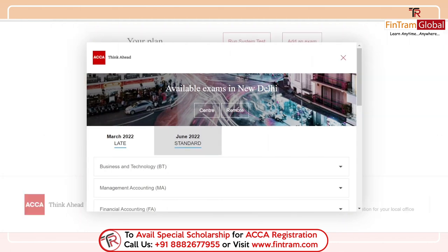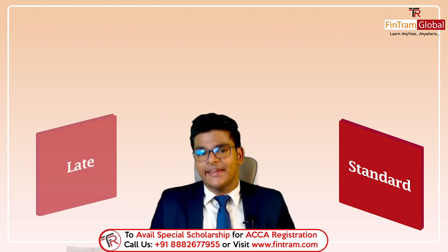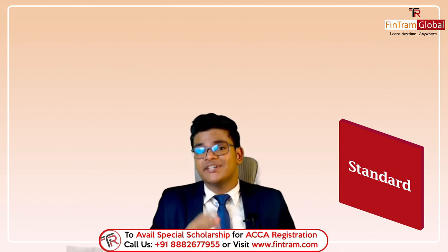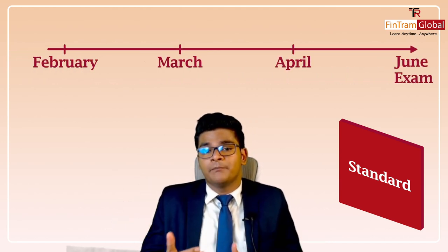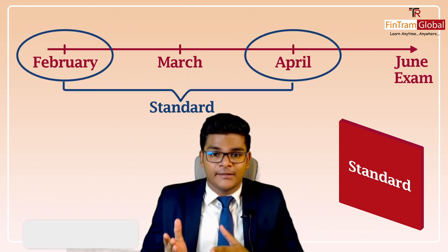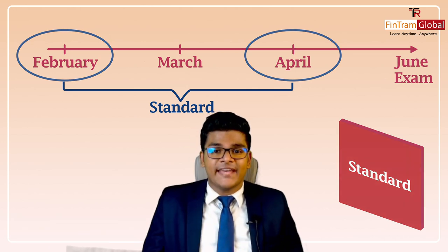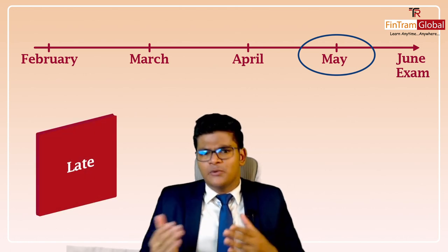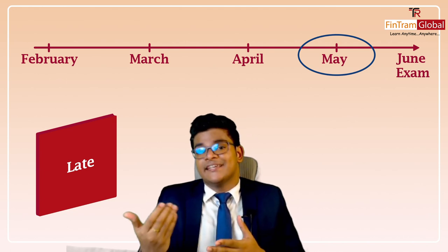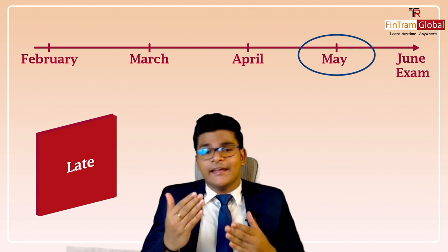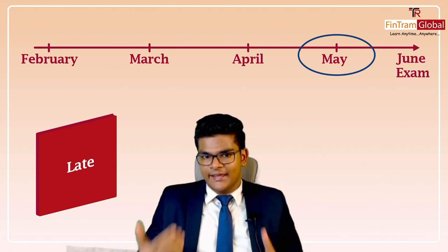What does this mean exactly? When it comes to booking your ACCA exams, there are two time phases to keep an eye out for: the standard entry time phase and the late entry. Standard entry is the time phase during which you are expected to book the exam. For example, for the June session, the opportunity to book begins from February through the end of April. However, if you are planning to book in the month of May, that would be the late entry time phase. The issue is there could be a risk of lack of availability of centers, and also the exam fees for late entry are a bit more expensive than standard entry. So it is always advised to go for standard entry.